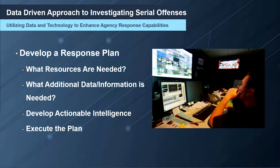Plan execution typically involves two parts. The first is the criminal investigation — investigators interviewing victims and witnesses, examining physical and electronic evidence, surveillance film — to identify and locate who is committing these crimes. The second part involves forward-looking, proactive efforts to prevent more events, such as physical stakeouts, electronic surveillance, and other activities happening within the agency.